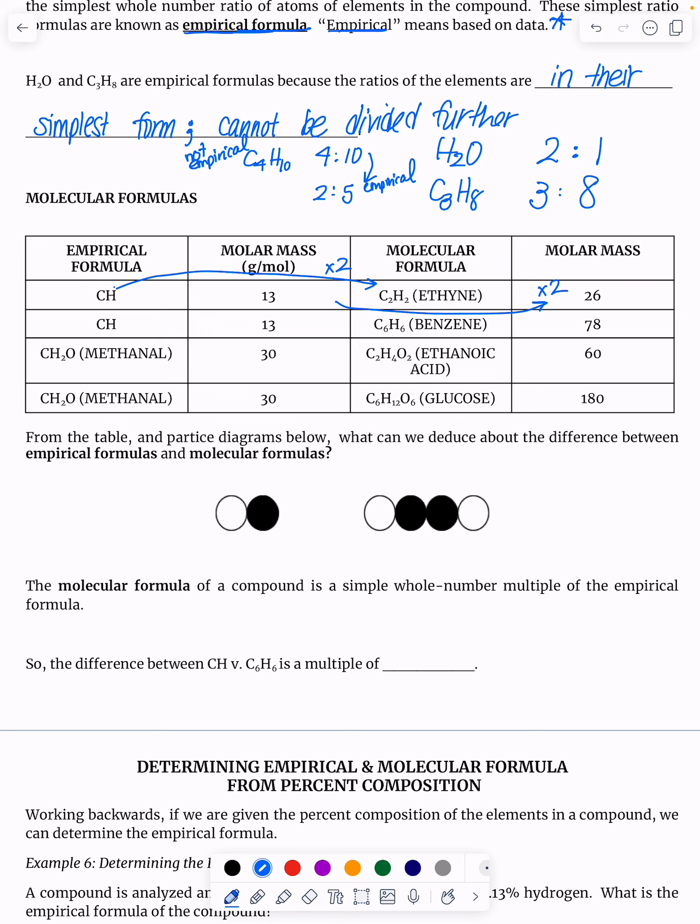But the molecular formula, C2H2, which is a different compound, has a molar mass of 26. That's times two. You could do the same thing for benzene here or ethanoic acid and glucose.